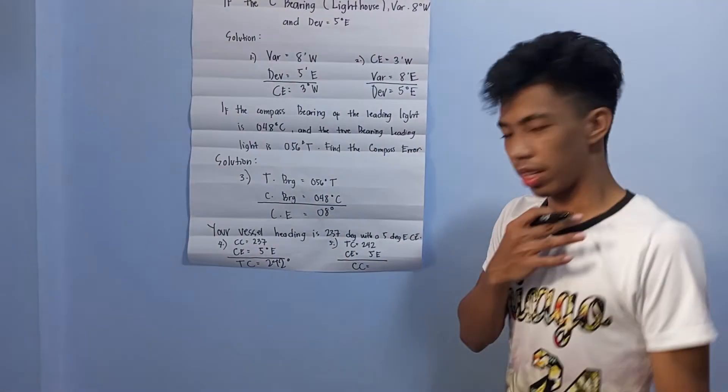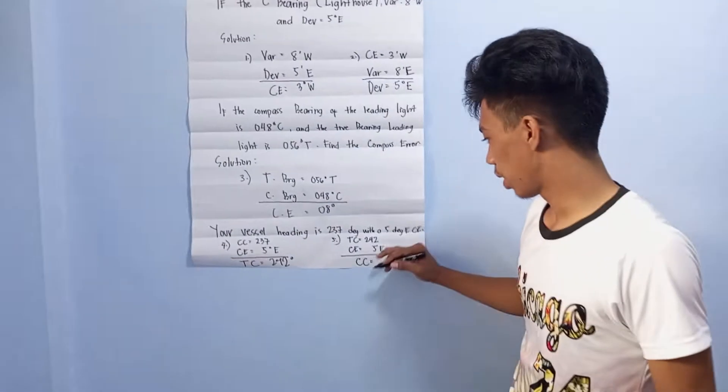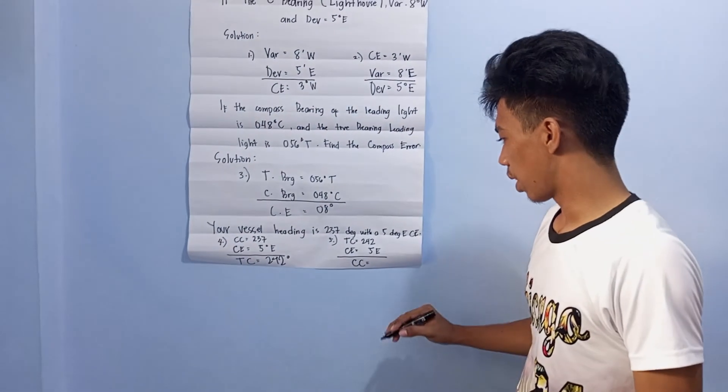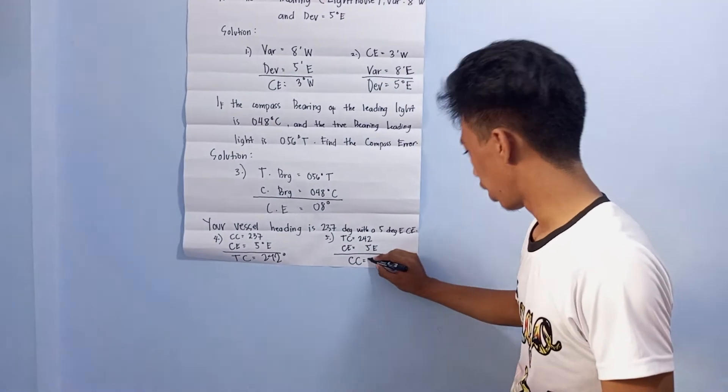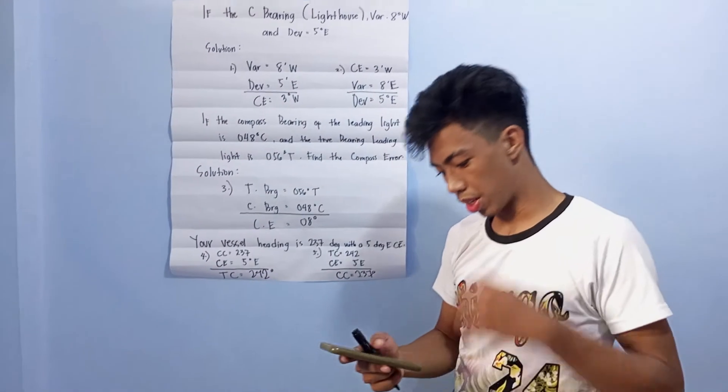Fifth question: to get the compass course, just subtract the true course and compass error. The answer is 237 degrees.